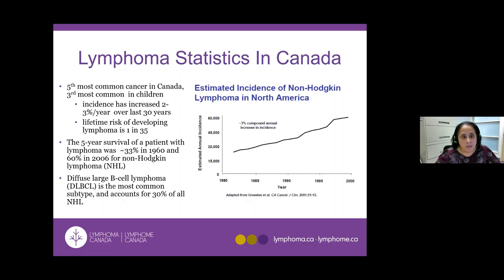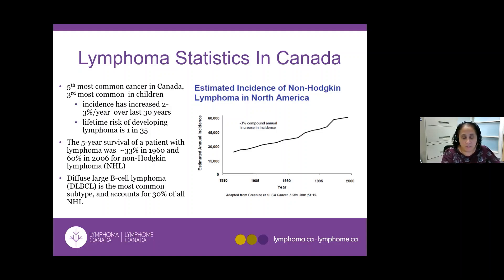When we talk about lymphoma, it is actually quite common — the most common disease in adults after the big four: breast, colon, prostate, and lung cancer. As you can see on the graph on the right, we are seeing an uptick in the number of new cases over the years. But the good news is we're getting better at our treatments. Over the last 50 years, we have doubled our cure and survival rates. Diffuse large B-cell lymphoma is in fact the most common type, accounting for 30% of all non-Hodgkin's lymphoma.